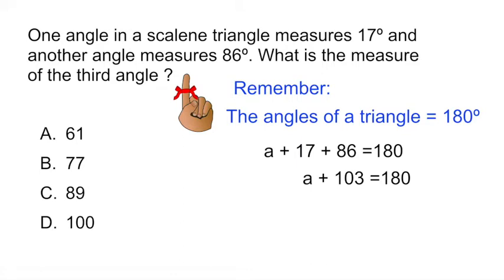Okay so we have positive 103 so we would subtract. On the left side that is going to cancel out and then on the right side if we subtract 103 from 180 that gives us 77. All right so the missing angle was 77.